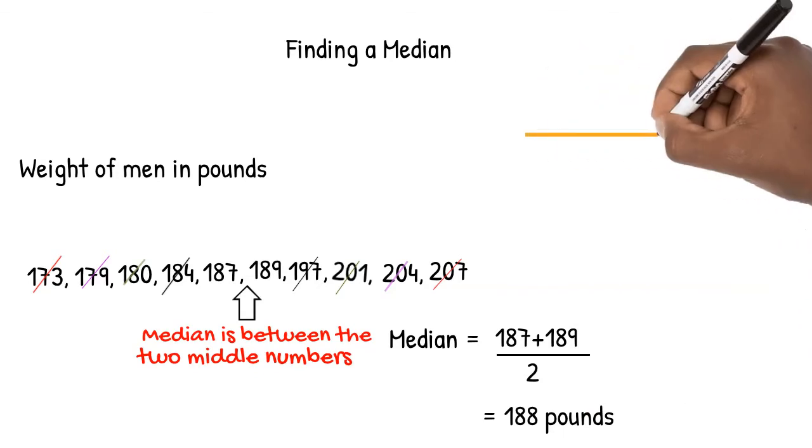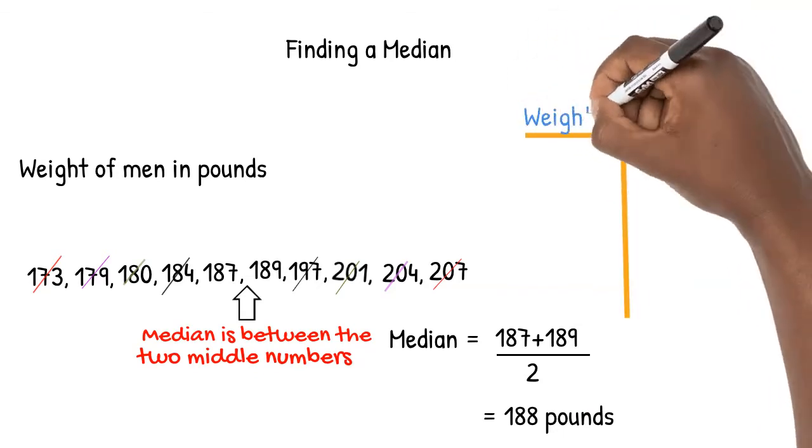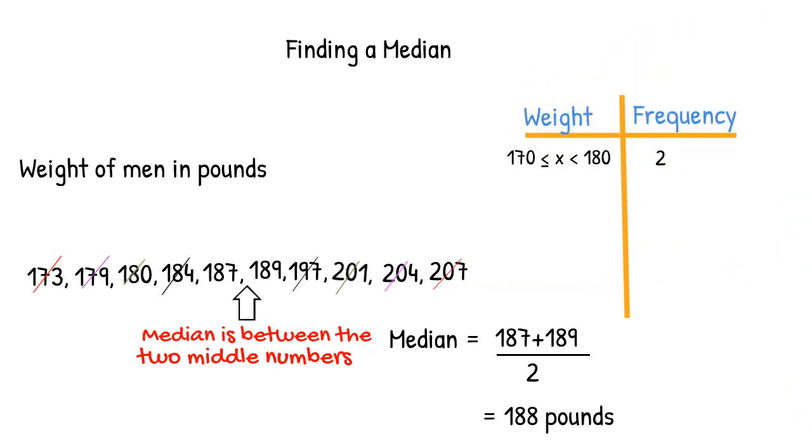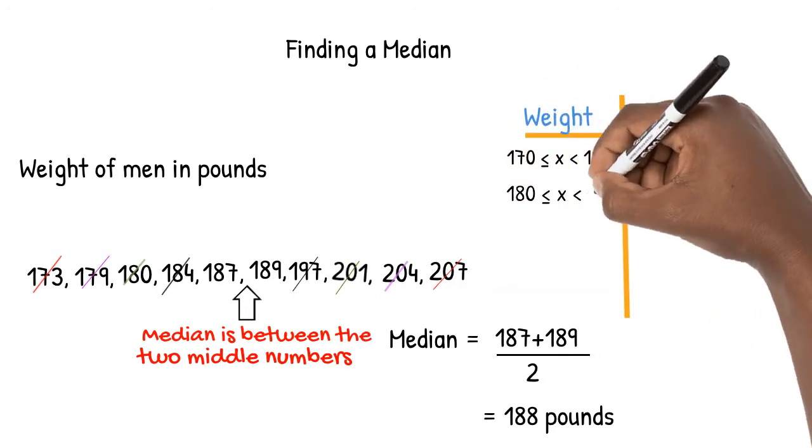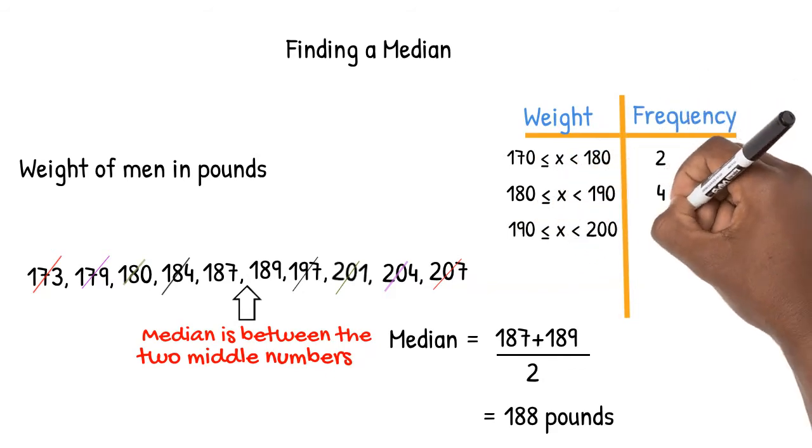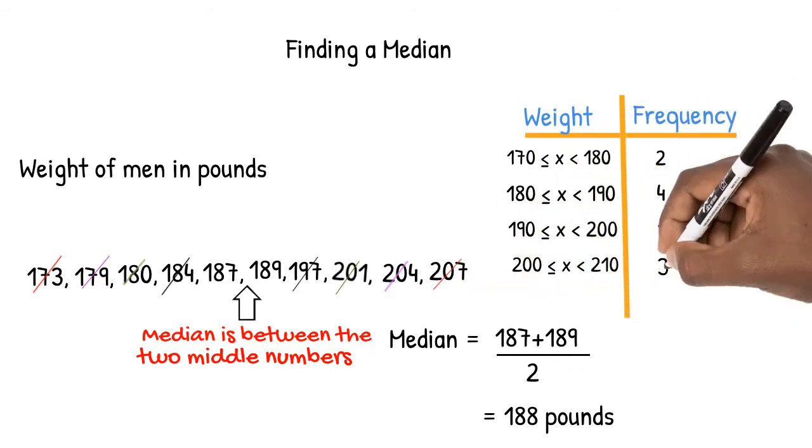Sometimes, you may be asked to find the range in which the median lies when given a frequency table. This table was created from our list. There were two numbers between 170 and 180, not including 180, four numbers in the next category, one number in the next category,